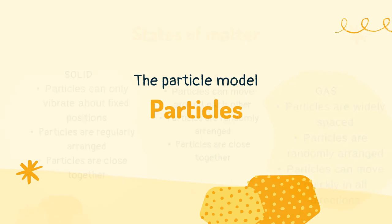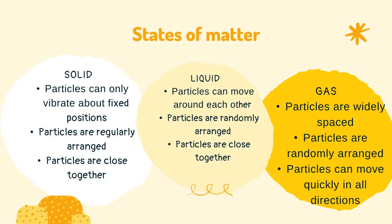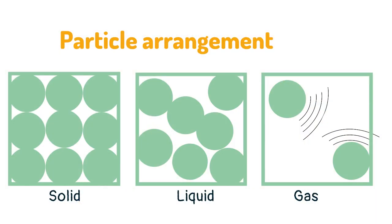Particles. In a solid the particles are regularly arranged and positioned closely together. In a liquid the particles are randomly arranged but remain closely together. In a gas the particles are randomly arranged and spaced far apart. These diagrams show the arrangement of the particles in a solid, liquid and a gas.